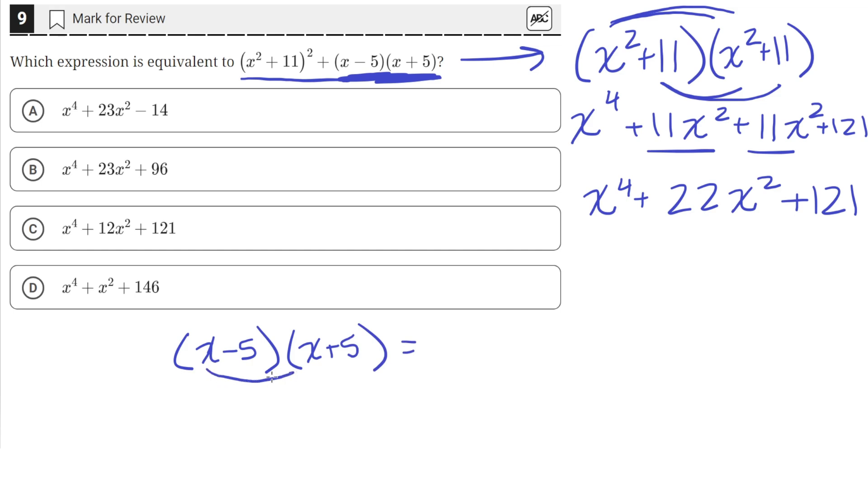So we'll just do the same thing again. Multiply this with both of these, and then the second term with both of these, and add those quantities together. So x times x is x squared, x times 5 is 5x, negative 5 times x is negative 5x, and then negative 5 times 5 is minus 25.